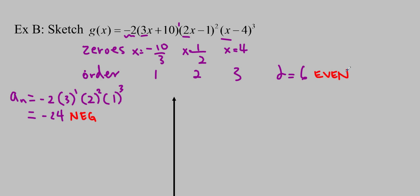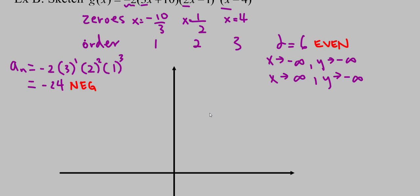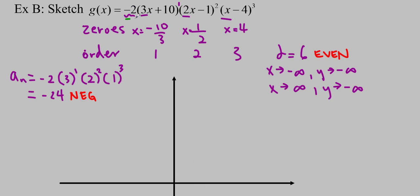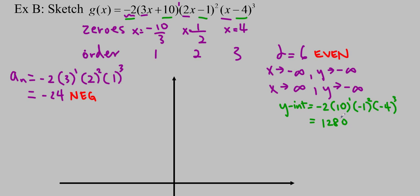Now write the end behaviors. As x approaches negative infinity, y approaches negative infinity because the degree is even and the leading coefficient is negative. As x approaches positive infinity, y approaches negative infinity as well. Then calculate the y-intercept: negative 2 times 10 to the 1, times negative 1 squared, times negative 4 to the 3. Make sure you get your negatives in and put the exponents on the outside. According to my calculator, this is positive 1280.